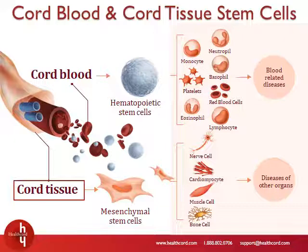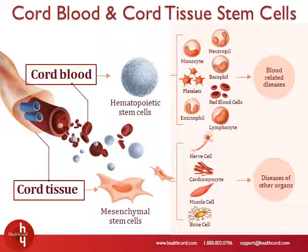Cord tissue contains a different type of stem cells known as mesenchymal stem cells. They have the ability to give rise to bone cells, muscle cells, cartilage cells, and nerve cells. Together, cord blood and cord tissue contain two different kinds of stem cells that can be used to grow a number of different cell types in the body.